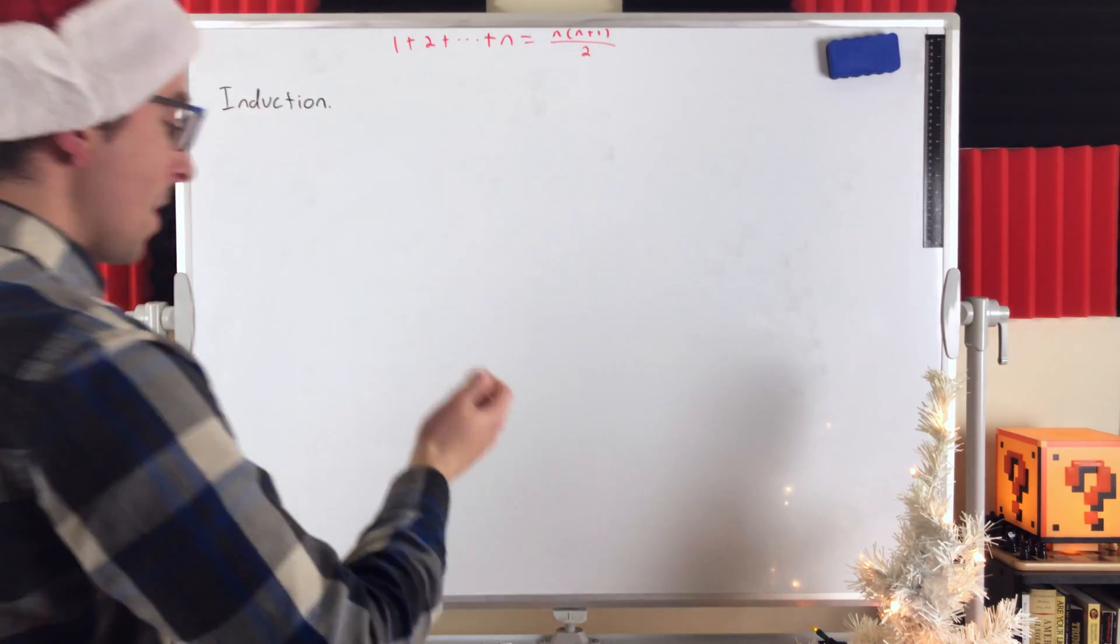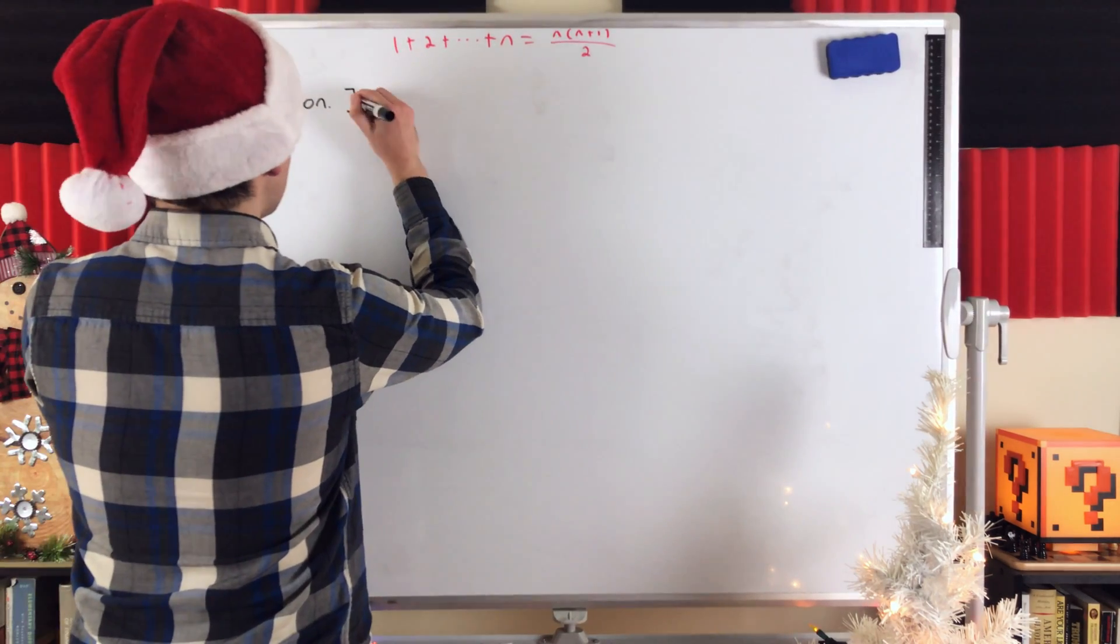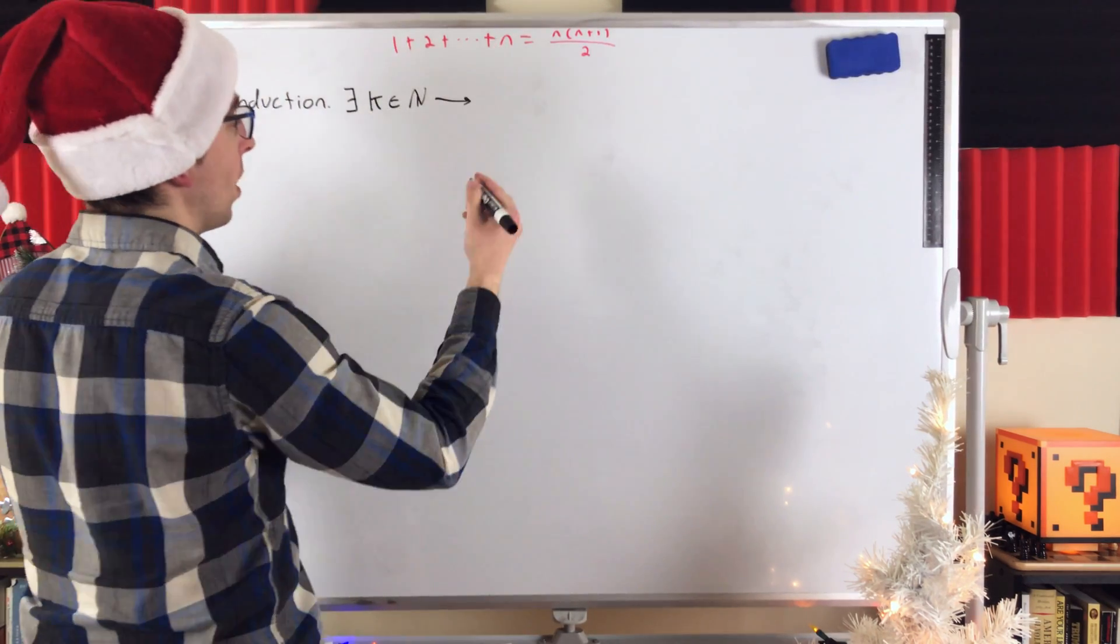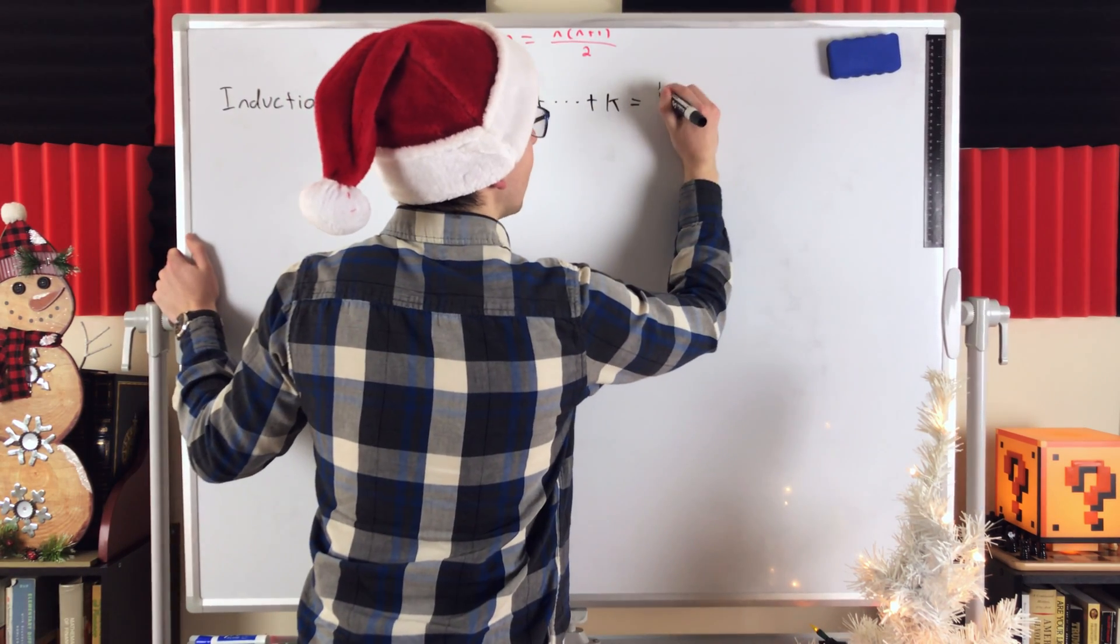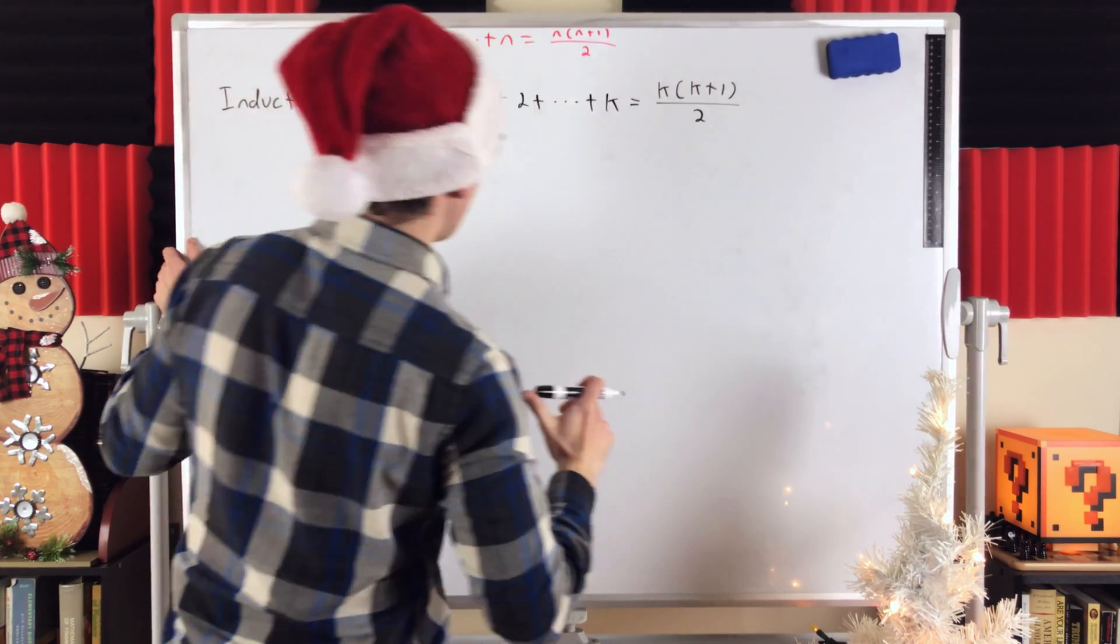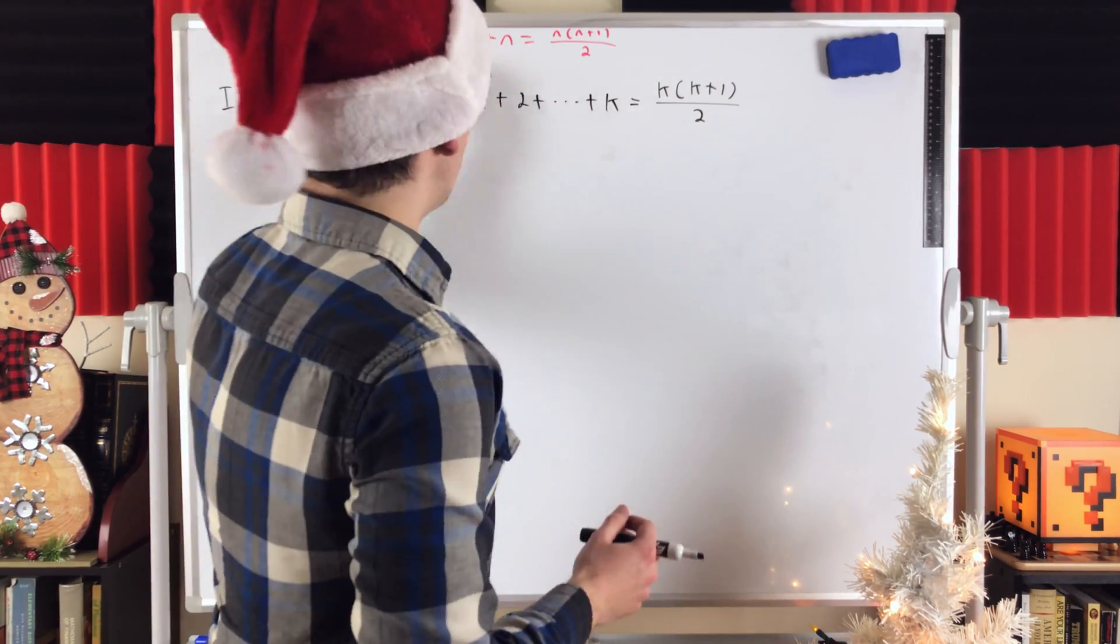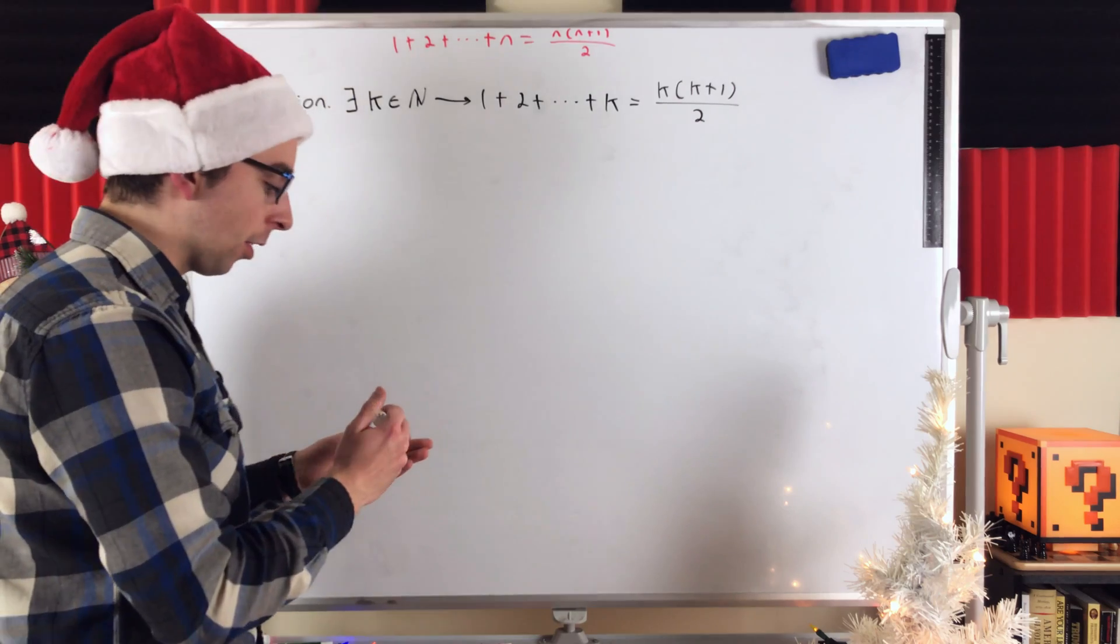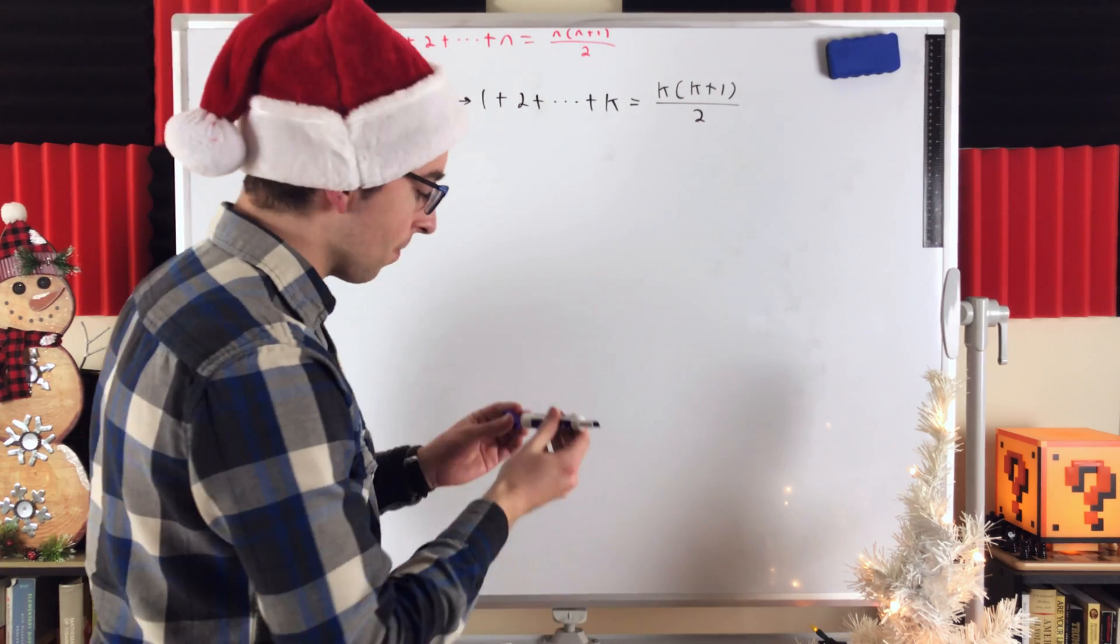So, the induction step. We're going to begin by assuming that our result holds for some value we're interested in. So we'll say there exists some natural number k, some k in the natural numbers, such that our equation is true. The sum of the first k natural numbers, 1 plus 2 all the way up to k, is equal to k times the next natural number, k plus 1, divided by 2. Then, we want to use this assumption, often called the inductive hypothesis, to show that our result is true for the next counting number, k plus 1. So, we want to show that the sum of the first k plus 1 counting numbers is given by this expression, where n equals k plus 1.